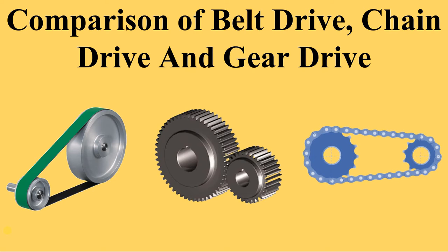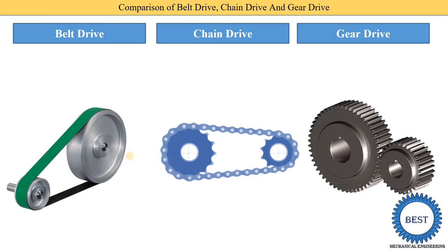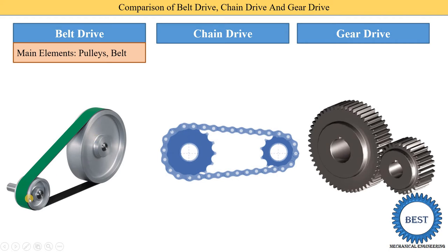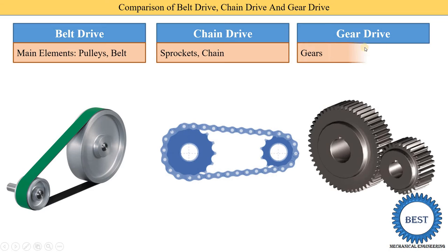In this video, we discuss comparison of belt drive, chain drive, and gear drive. The first comparison is on the basis of main elements. Here in this diagram, we see this is a belt drive and the main component is the pulley and belt. In a chain drive, the main component is the sprocket and chain, and in a gear drive, the main component is the gear.